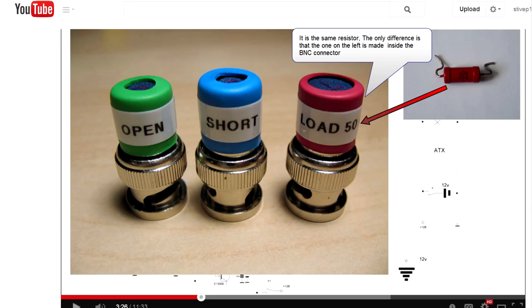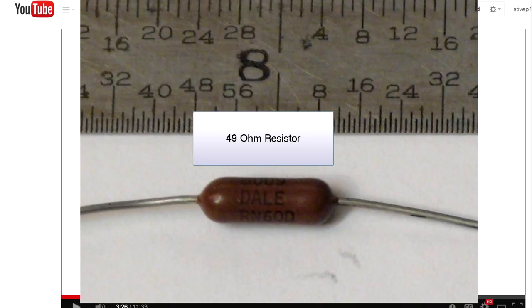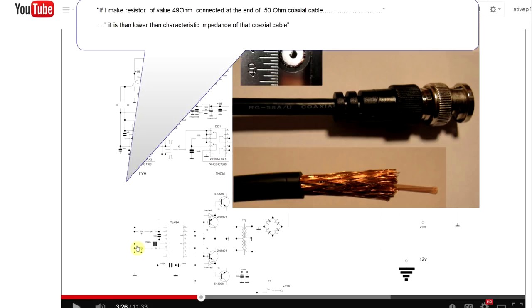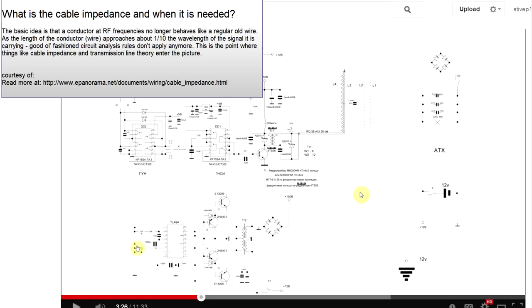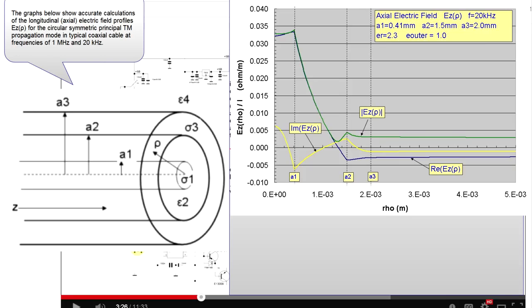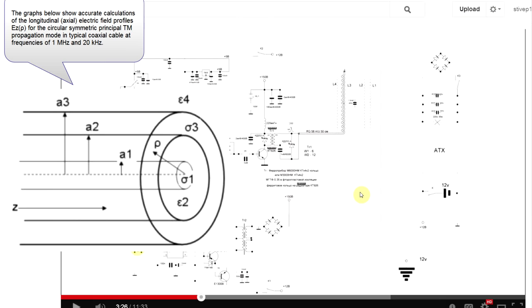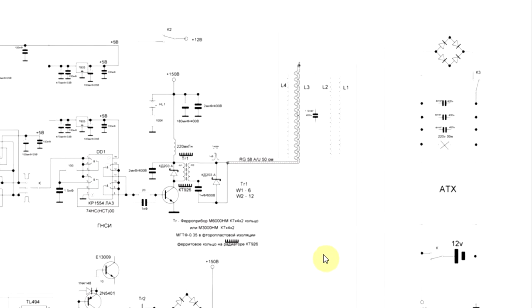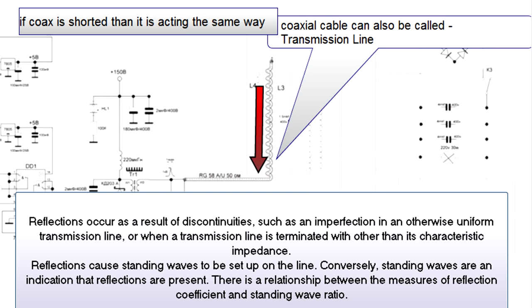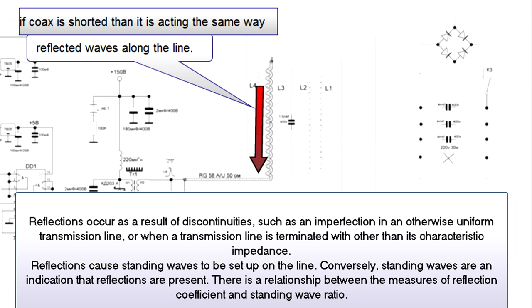At 50 ohms, all the energy gets absorbed. If I make the resistor 49 ohms on a 50-ohm cable — lower than the characteristic impedance of the cable — we're going to create a reflected wave back to the transmitter, and a standing wave as well.